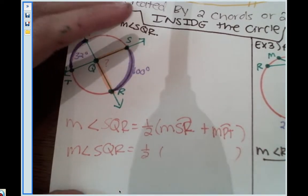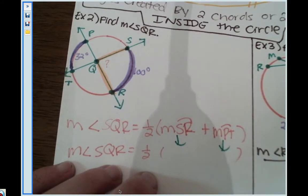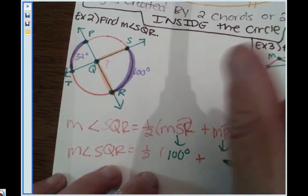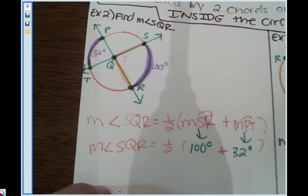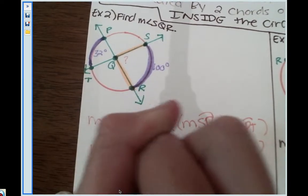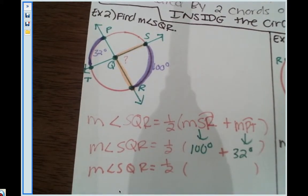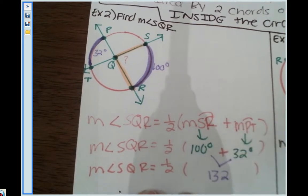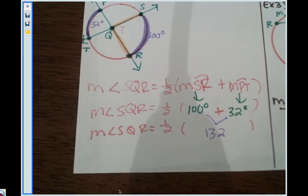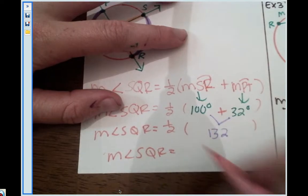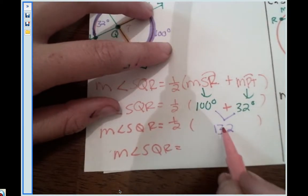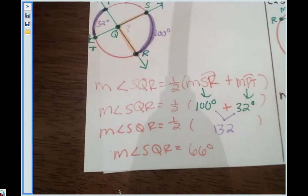Let's fill in the values. The measure of arc SR is 100 degrees and the measure of arc PT is 32 degrees. So the measure of angle SQR equals one half of 100 plus 32. Since 100 plus 32 is 132, we multiply by one half — which is the same as dividing by two — giving us 66 degrees for the measure of angle SQR.